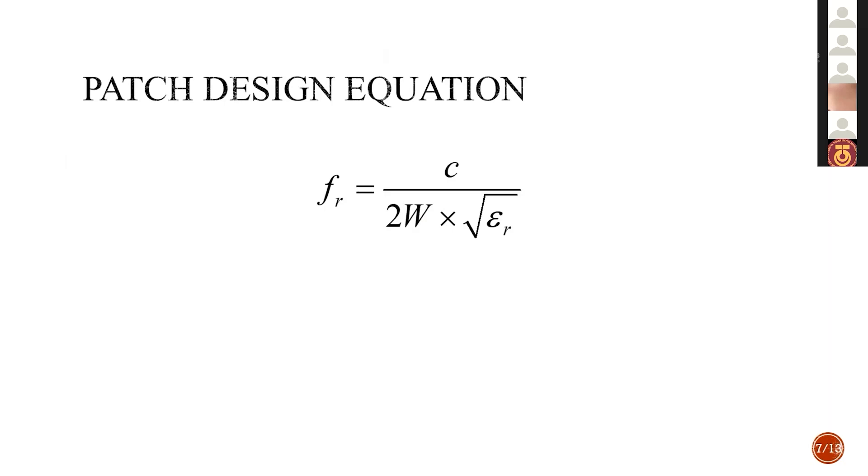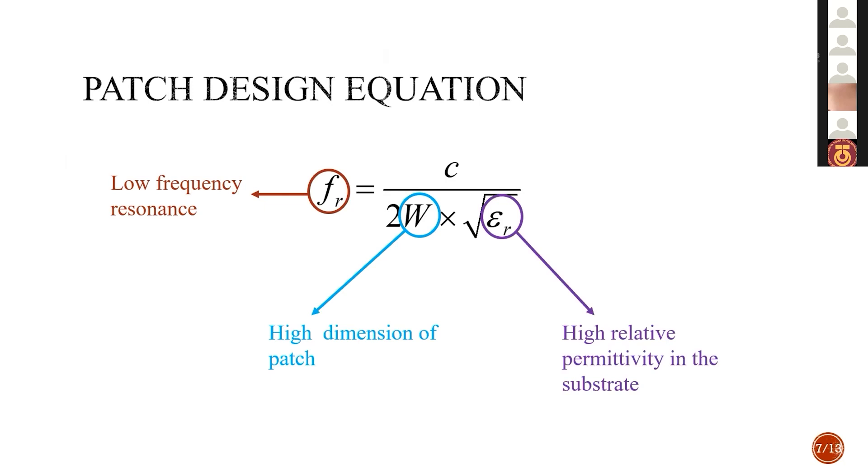Let's begin with the patch design equation. The patch design equation announces that the resonant frequency is related by c over 2W by radical epsilon r, where fr is the resonant frequency, W dimension, and epsilon r is the relative permittivity. To obtain a low frequency resonance, we must have a high dimension of patch and a high relative permittivity in the substrate.